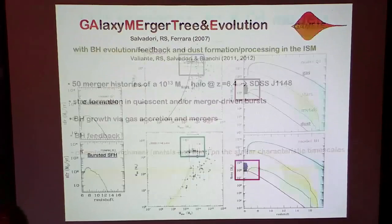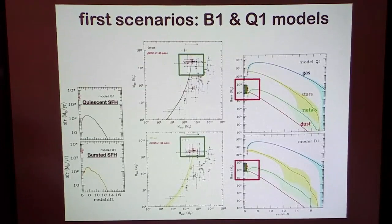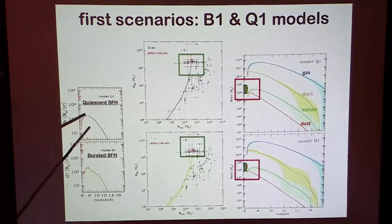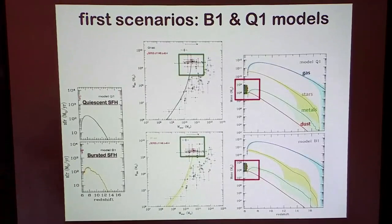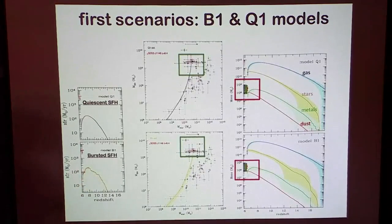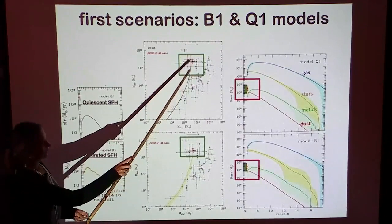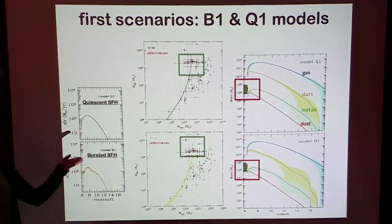The first scenarios we investigated were two extreme cases: star formation occurring in a quiescent way on the dynamical timescale of each single progenitor of this huge halo at redshift 6.4, or occurring with enhanced efficiency through merger-driven bursts. The star formation rate was tuned so as to be compatible with the upper limits of the dynamical mass.